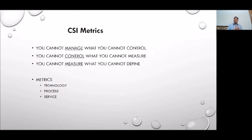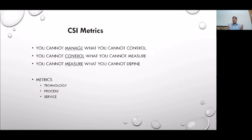Technology metrics could be, for example, availability of a server — measured by the time the server is not available. These metrics are super important from a measurement perspective, and it is necessary to measure the service you want to improve if you want to bring service improvement in that particular area. That concludes this module; we'll meet again in the next one.